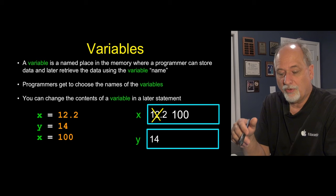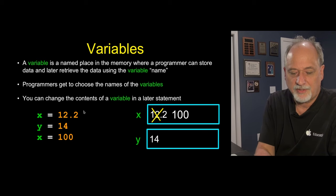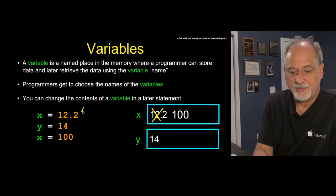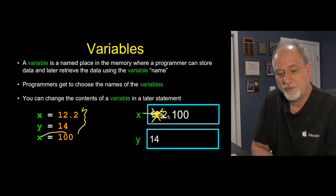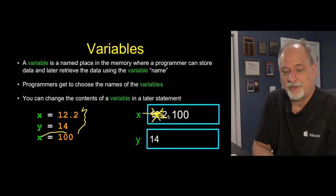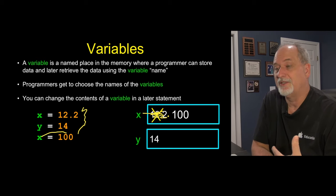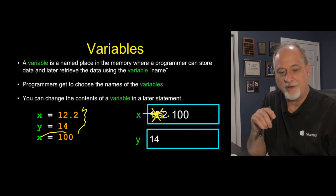Now, these variables hold one value. So now if we have these three statements, these two, and then the third one executes, it says put 100 into x, but that wipes out the old value of 12.2. And it rewrites it with 100. And so we can change the variables. That's another reason that we call them variable.